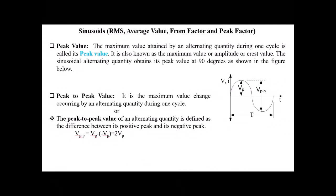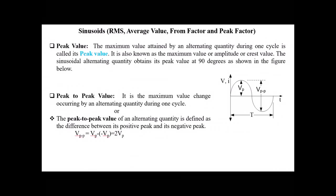Maximum value attained by an alternating quantity during one cycle is called its peak value. It is also known as the maximum value or amplitude or crest value. The sinusoidal alternating quantity obtains its peak value at 90 degrees as shown in the figure.